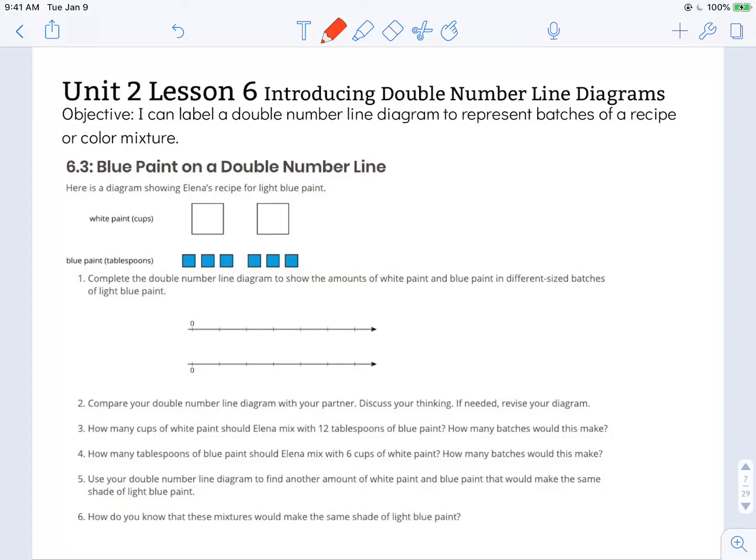So with number lines we know that we can count by ones, one, two, three, four, five, six, seven, but we can also count by other values like two, four, six, eight, or five, ten, fifteen, twenty for each of our tick marks. So we can adjust how we use our number lines to fit our needs.